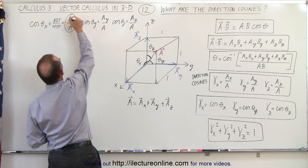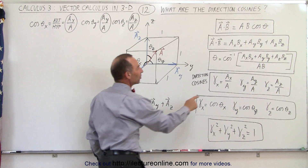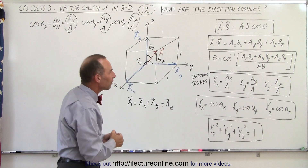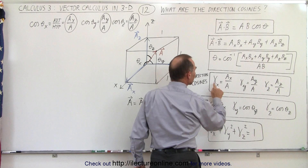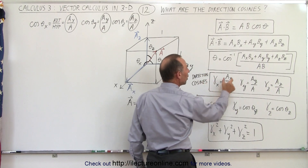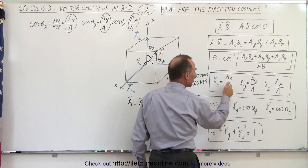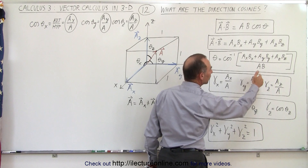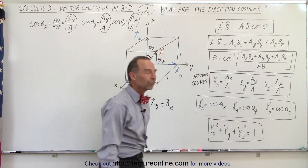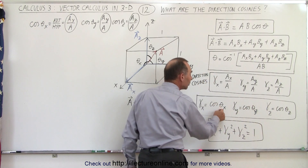Those three ratios — a sub x over a, a sub y over a, and a sub z over a — are defined as gamma sub x, gamma sub y, and gamma sub z. It doesn't matter what symbol we use; I just chose gamma. These three symbols are what we call the direction cosines: simply the ratio of each component's magnitude divided by the magnitude of the vector.